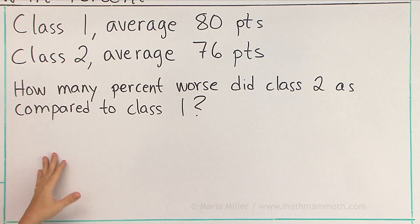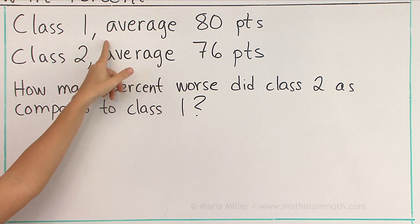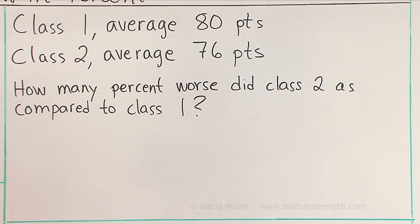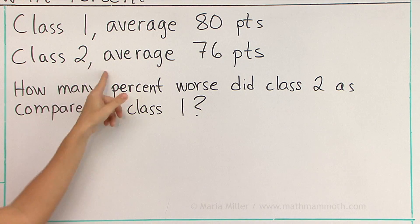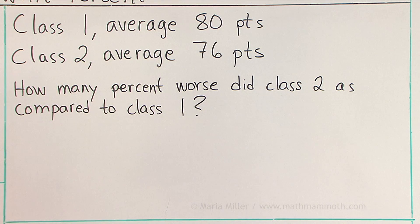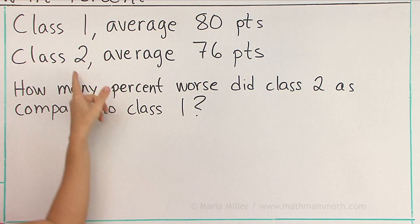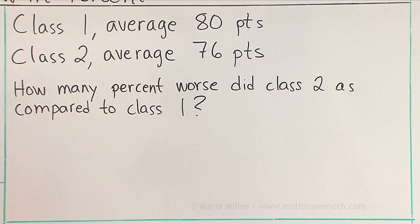Over here we have two classes and maybe they both took a math test or something. And the first class got an average of 80 points in this test. And then class 2 got an average of 76 points. The question is, how many percent worse did class 2 do as compared to class 1? Now think about it yourself. Can you write this fraction? Difference over reference?